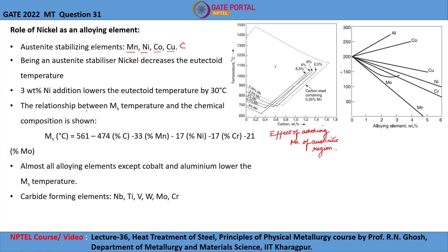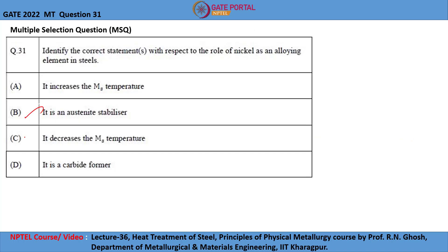The relationship between the martensite start temperature and the chemical composition is shown in this equation. From this equation, we can see that every term is negative, which means that addition of these alloying elements reduces the martensite start temperature. Also, from the second graph showing the effect of alloying elements on the martensite start temperature, we can see that almost all alloying elements except cobalt and aluminum reduce the martensite start temperature. From this, we conclude that C is the correct answer and A is not correct.